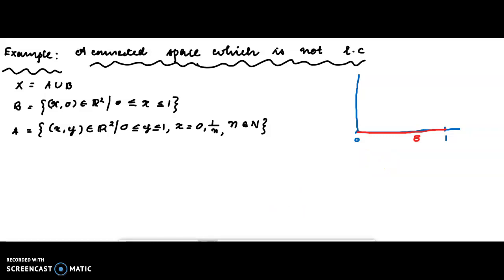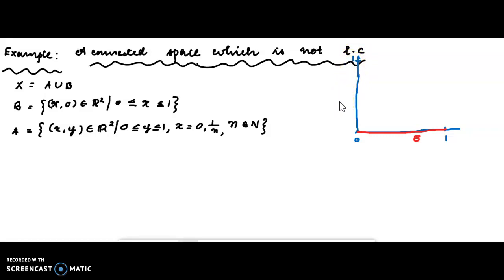The union of B and A: A is the set of (x, y) elements of R² such that x is equal to 0, and 0 is less than or equal to y less than or equal to 1.